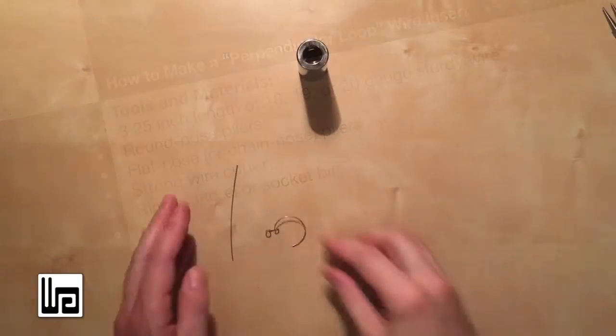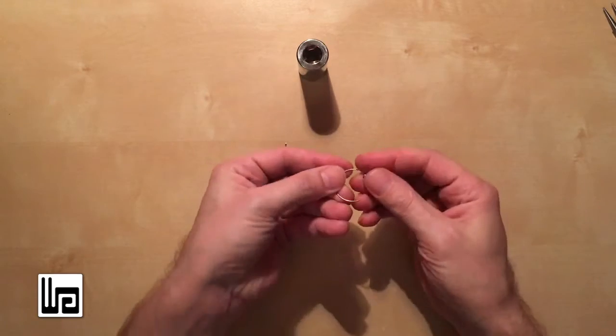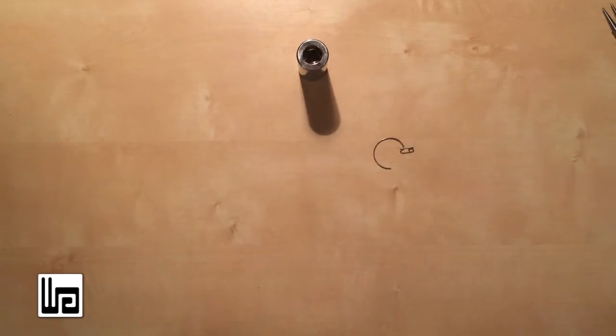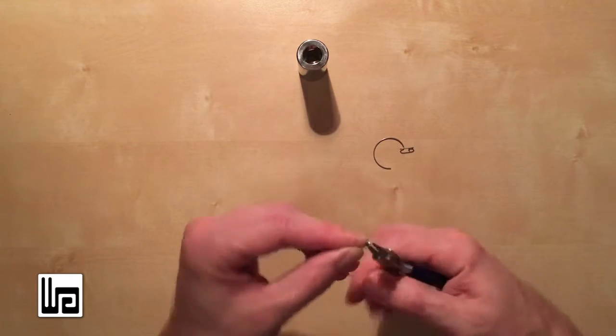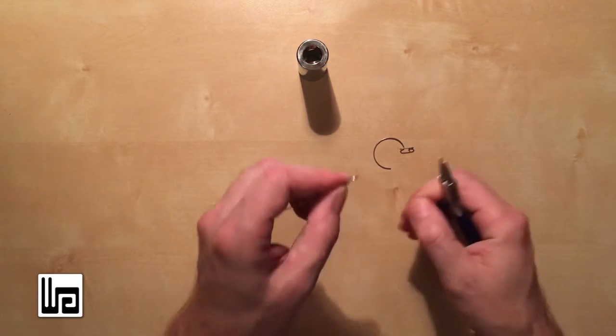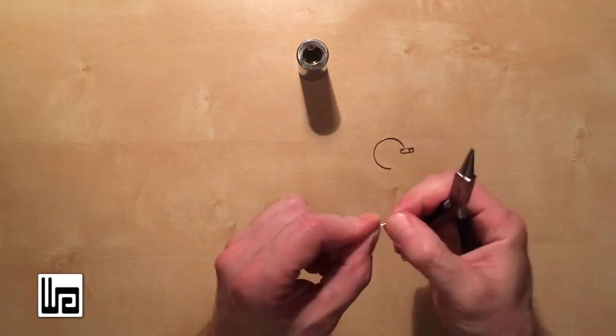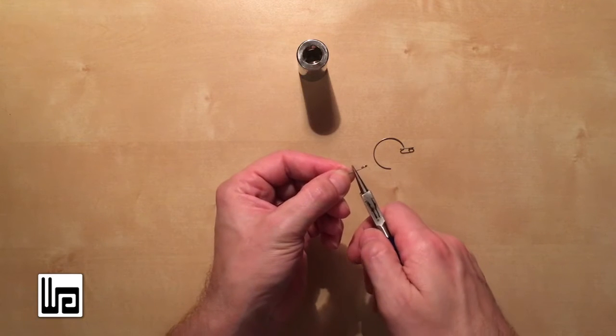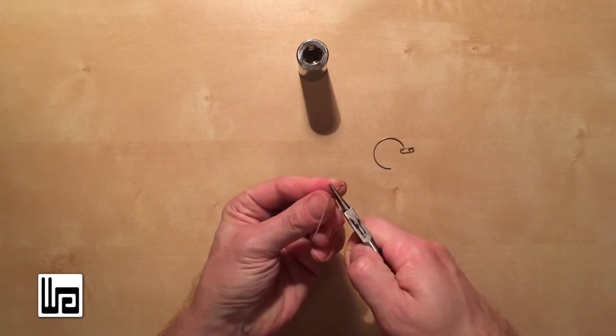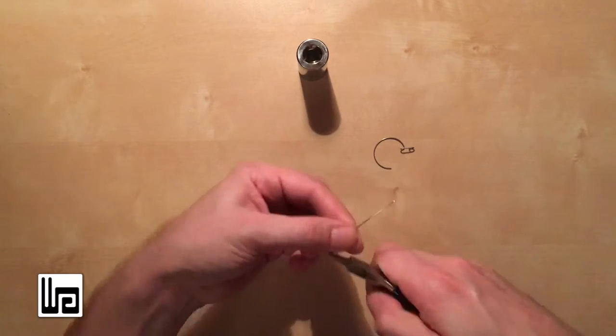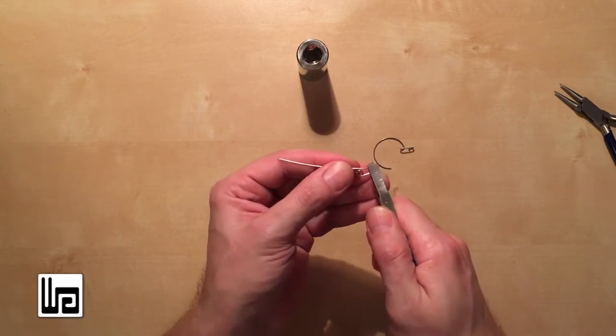And the next one I call a perpendicular loop, and you want to start this one on the end, make a little loop until it touches the wire like that, it doesn't have to be perfect. And then you want to go down a little ways around those pliers, and pull it back up. And then fold it out, and it can go in either direction.